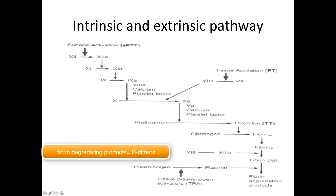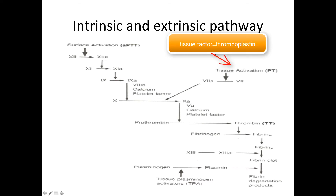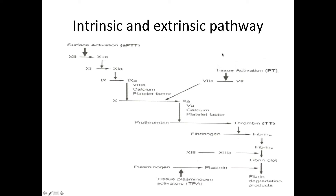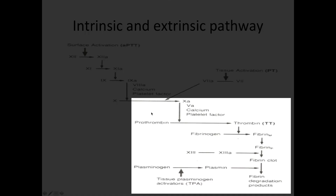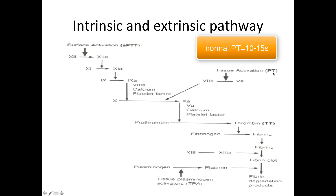At the same time, there is activation of another clotting cascade called the extrinsic pathway. This is activated by tissue factor — a factor released by endothelial tissue upon any damage. Tissue factor activates factor 7, which bypasses several intrinsic pathway steps and activates factor 10 onward through the common pathway. The extrinsic pathway takes less time, and is measured by PT — prothrombin time — with a normal value between 10 and 15 seconds.